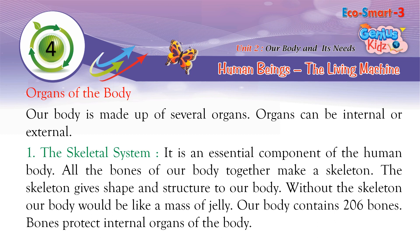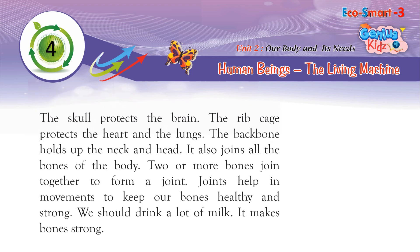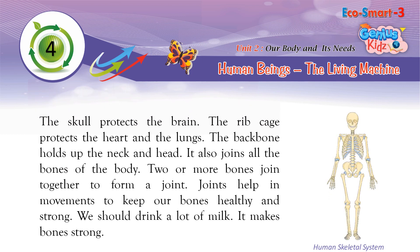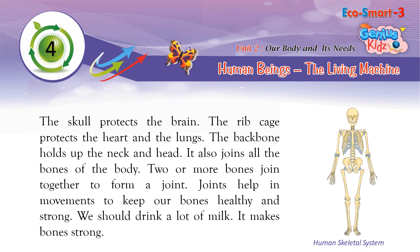Our body contains 206 bones. Bones protect the internal organs of the body. The skull protects the brain. The ribcage protects the heart and the lungs. The backbone holds up the neck and head and also joins all the bones of the body.